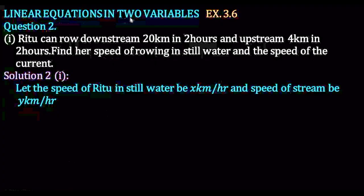Linear Equation in 2 Variables Exercise 3.6, Question 2. Ritu can row downstream 20 km in 2 hours and upstream 4 km in 2 hours. Find her speed of rowing in still water and the speed of the current.